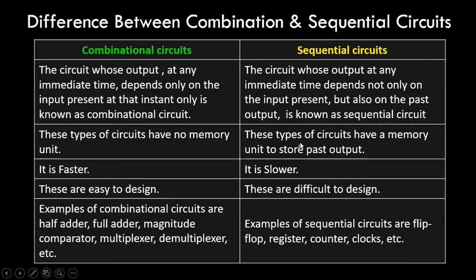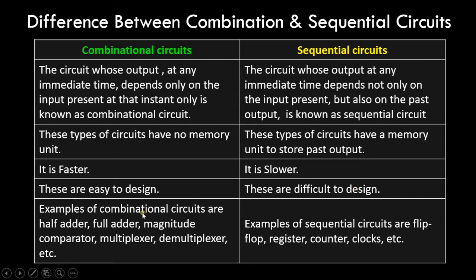Combinational circuits are generally faster and sequential circuits are generally slower, because sequential circuits have a separate unit to store the past state, making the circuit more complex. Combinational circuits are easier to design, while sequential circuits are more difficult to implement. Examples of combinational circuits are half adder, full adder, comparators, multiplexer, demultiplexer, etc. — and we've discussed quite a lot of these in this playlist.